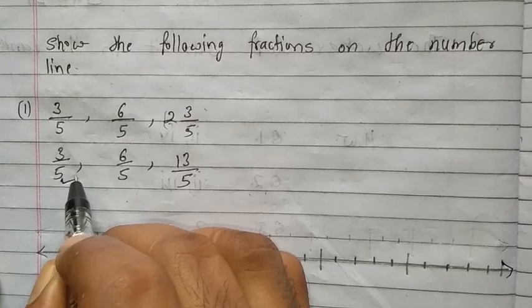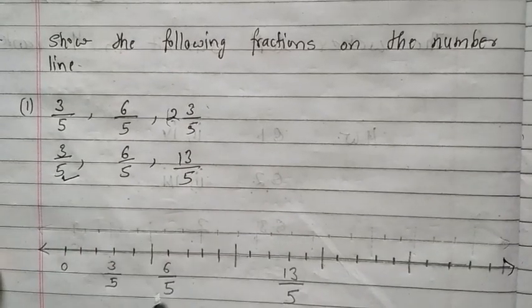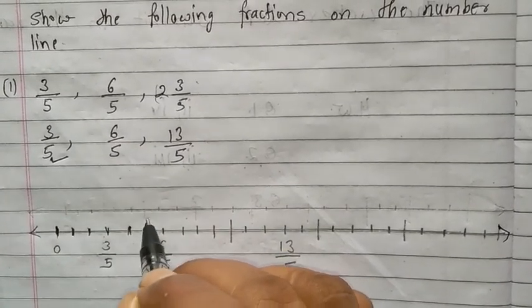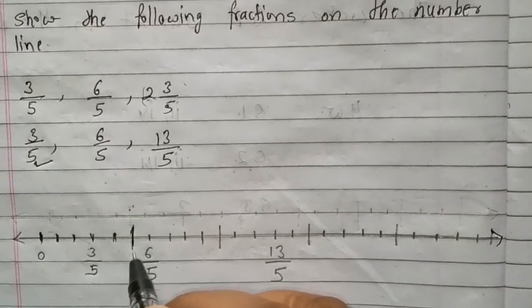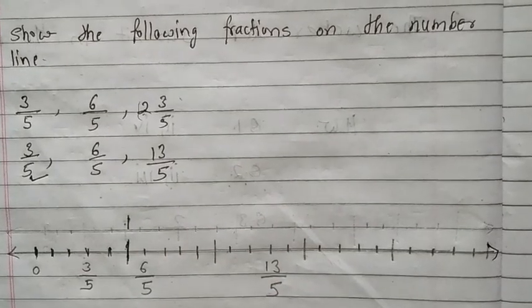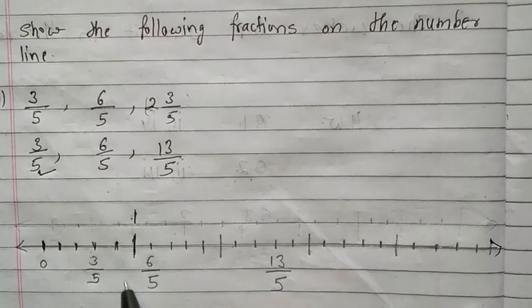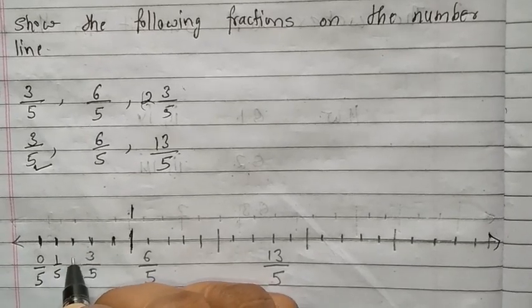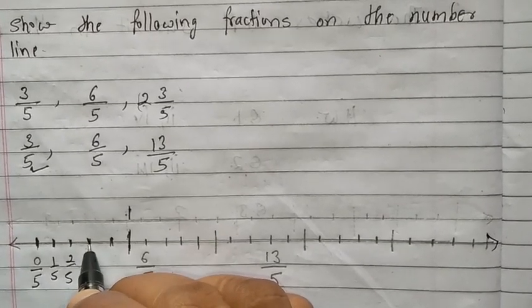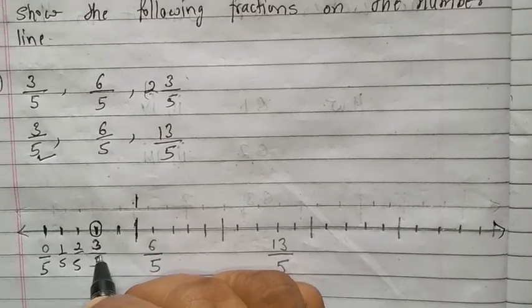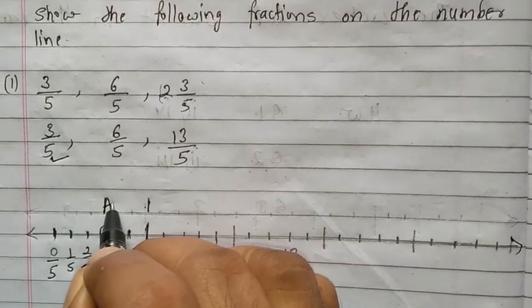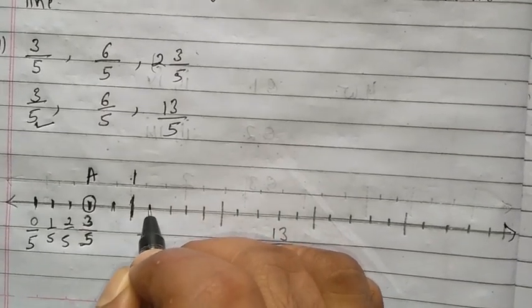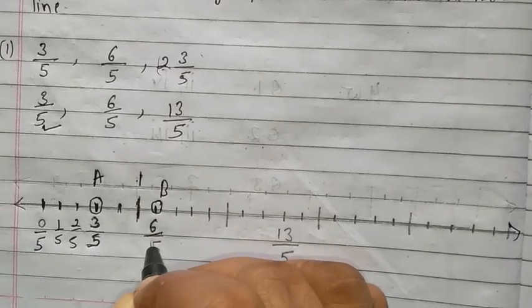See the denominator — what is given? 5. So 1 part is divided into 5 parts. Now see here: this is 0. Count 1, 2, 3, 4, 5 — so this is 1. If we count from here: 0 upon 5, 1 upon 5, 2 upon 5. We want to show 3 upon 5 — 3 upon 5 comes here. This is point A. Next is 6 upon 5: from 3 upon 5, then 4 upon 5, 5 upon 5 — point B is showing 6 upon 5.